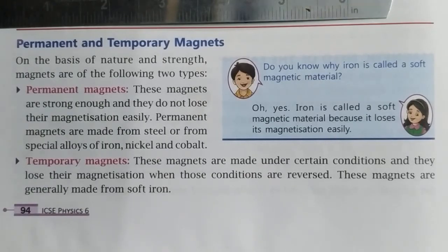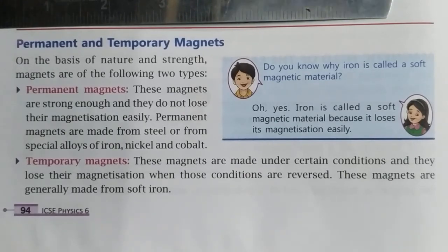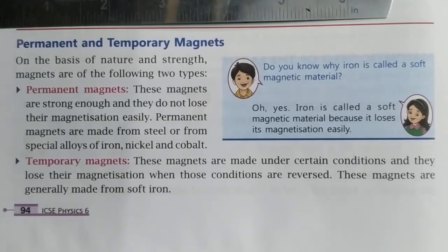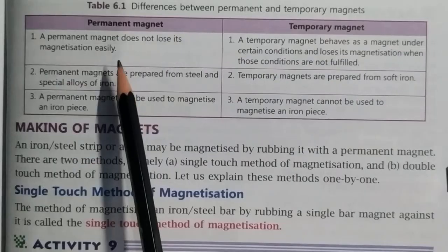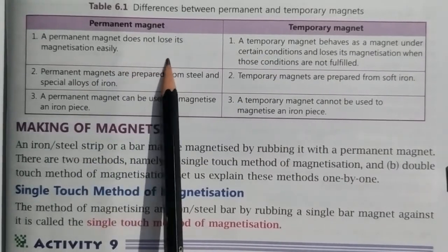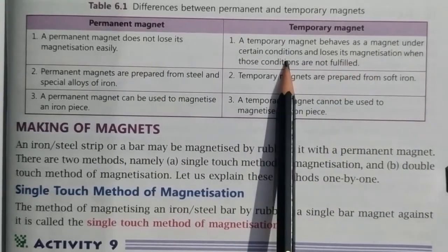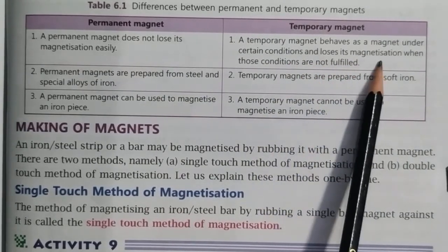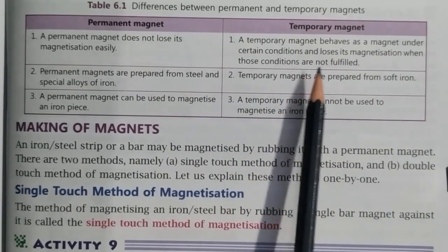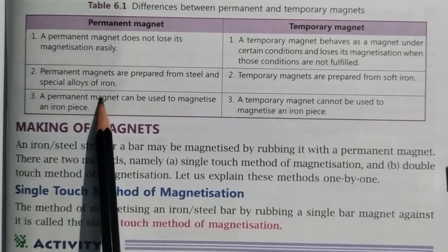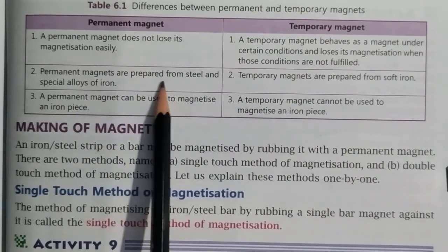We are going to discuss permanent and temporary magnets. Permanent magnets and temporary magnets can be differentiated on the basis of nature and strength. Permanent magnets will not lose their magnetism easily, while temporary magnets behave as a magnet only under certain conditions and lose their magnetism when those conditions are not fulfilled.